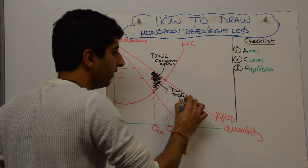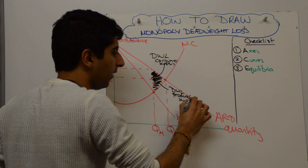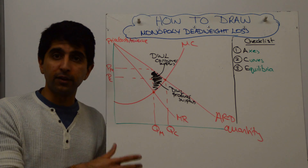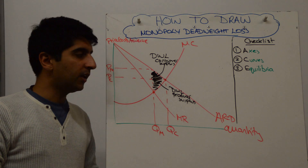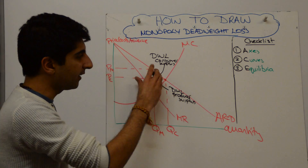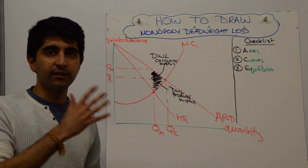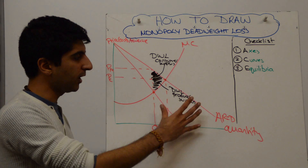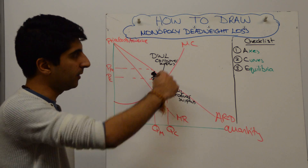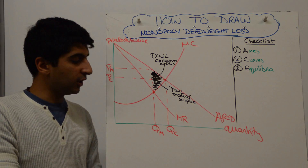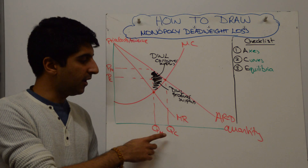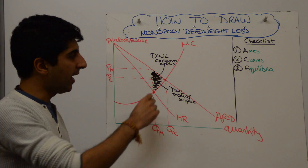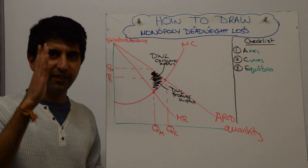I've explained why this occurs in a previous video, so have a look at that — it's in the description below if you want to look at it. But that's how you draw this diagram, that's how you construct it. Simple as that: revenue curves first, simple marginal cost, show your monopolist price and quantity, your competitive firm price and quantity, and it's that little triangle that juts out.